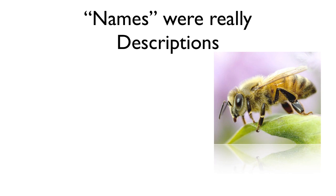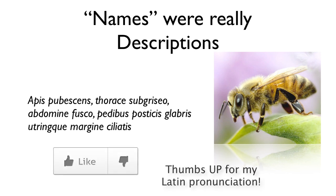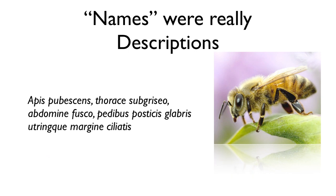In those days, names were really more descriptions. They were always written in Latin, which was established early on as the language of scholarly writing. And the honey bee was given this name: Apis pubescens, thorace subgricio, abdominae fusco, pedipis, aposticus galabris, ultringae margine ciliatus — which means hairy bee, underside of the thorax gray, abdomen striped, feet positioned to the rear, smooth, with outer areas on both sides having fine hairs. Though clumsy, obviously, this naming system worked for many years because scientists didn't yet realize how many living things they were going to have to name.